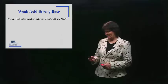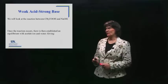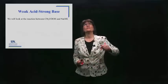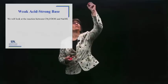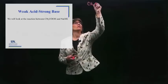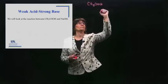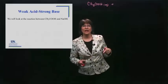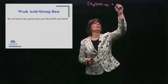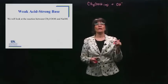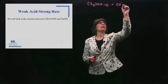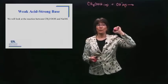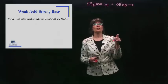Let's write that reaction up on the board. So acetic acid is our weak acid in water, and sodium hydroxide is the strong base. We don't want the spectator ion getting in the way, because we want to be able to write the reaction, which is a one-way arrow and a proton swap.